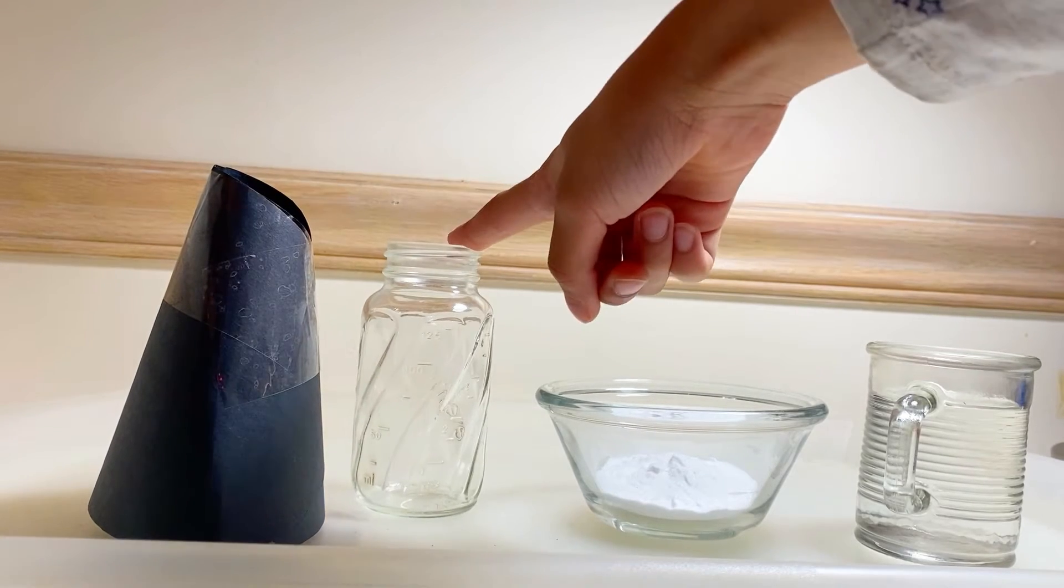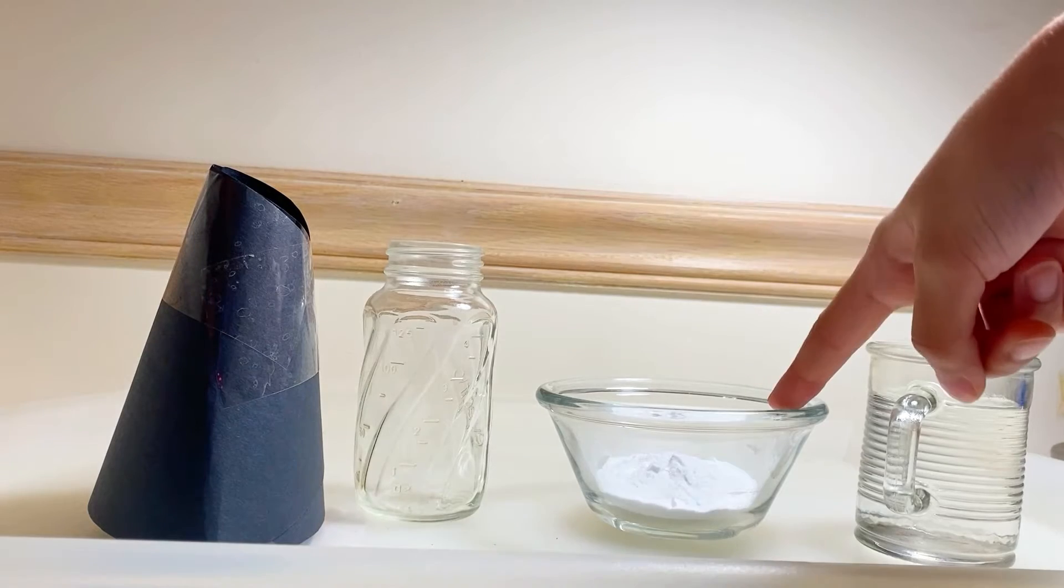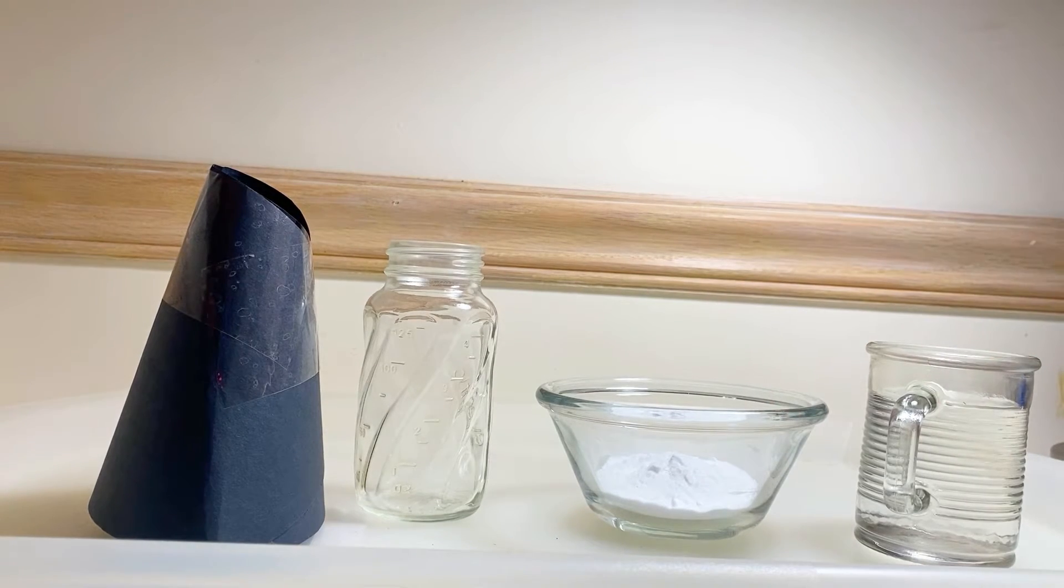You'll need a cone-shaped paper, a bottle, two tablespoons of baking soda, and one-fourth cup of vinegar.